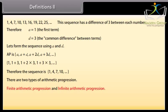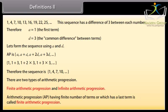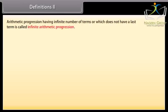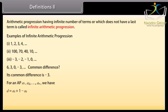There are two types of arithmetic progression: finite arithmetic progression and infinite arithmetic progression. The arithmetic progression having a finite number of terms, or which has a last term, is called finite arithmetic progression. Here are some examples of infinite arithmetic progressions. The common difference of this sequence is minus 3. In general, for an AP A1, A2, and so on till AN, we have D as A(k+1) minus Ak, where A(k+1) and Ak are the (k+1)th and the kth terms respectively.